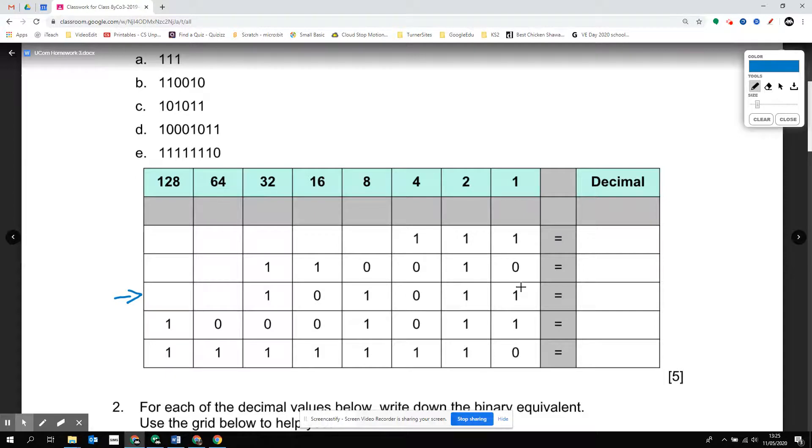There's a 1 here so I'll take 1 plus 2, not this one, plus 8, not this one, plus 32. It would be 43.